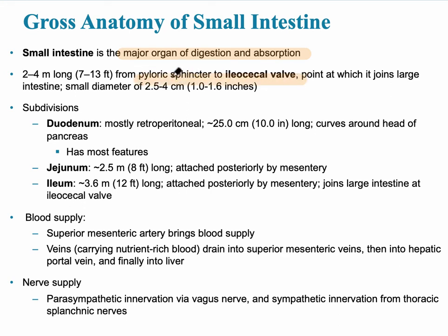The pyloric sphincter is at the distal end of the stomach, between the stomach and the small intestine. The ileocecal valve is between the ileum and the cecum, the first part of the large intestine. The three subdivisions of the small intestine include the duodenum, which is short — only about 10 inches long — and mostly retroperitoneal in location.